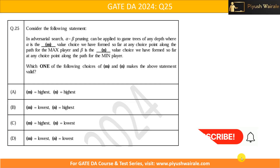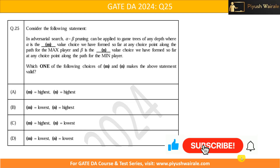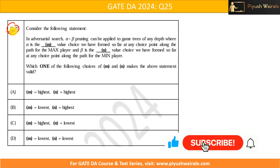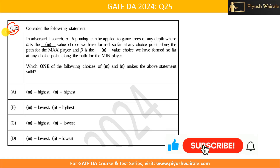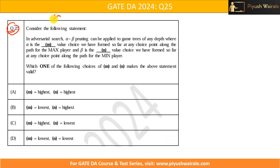Hello everyone. In this video we are going to discuss question number 25 of the GATE 2024 exam. It is a simple one-mark question, and if you know the concept of alpha-beta pruning and the minimax algorithm, you can directly solve it in less than one minute.